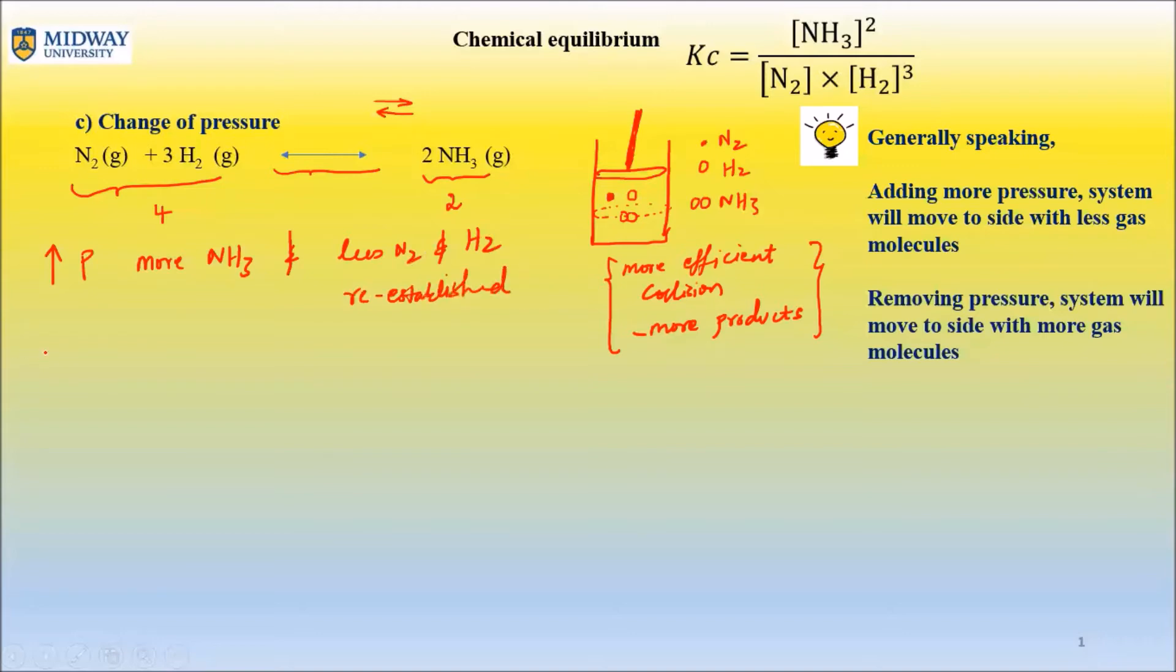So what if we decreased pressure? Well, what's the opposite of it? Then you'll have more N₂ and more N₂ and H₂, system would go to the side with more gas molecules because things are just quite going to be quite far apart. And this is not the situation we want, but that's what will happen. And we have less NH₃ than equilibrium is established.